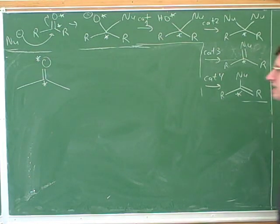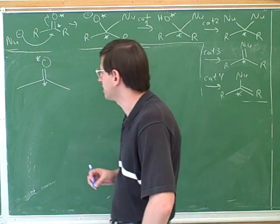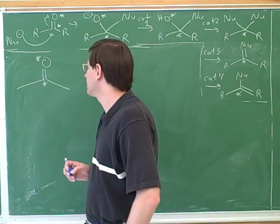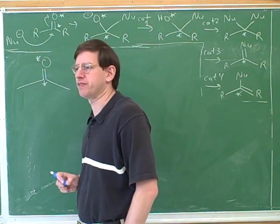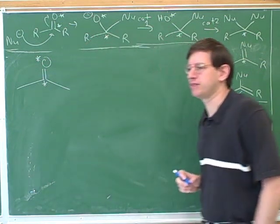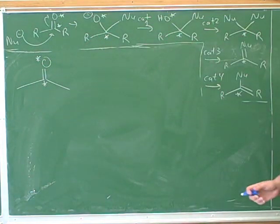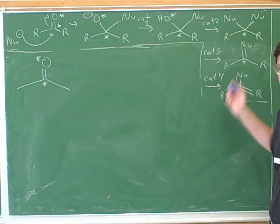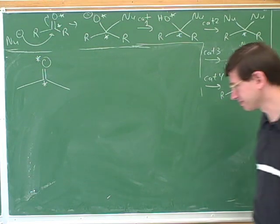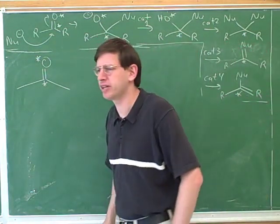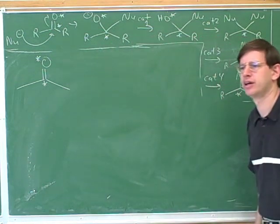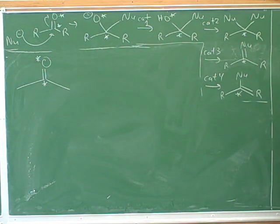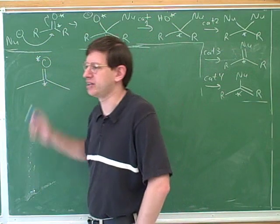So what did we learn about in Chapter 17 about aldehydes and ketones? The key thing we learned is that the carbonyl carbon is electrophilic. We saw nucleophilic attacks on the carbonyl carbon and we went through the four different categories of nucleophilic attack on the carbonyl carbon which I still have on the board. Why is the carbonyl carbon electrophilic? Because it's partially positive, because this oxygen is more electronegative than it.